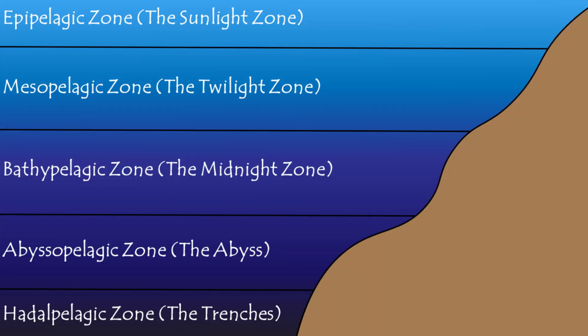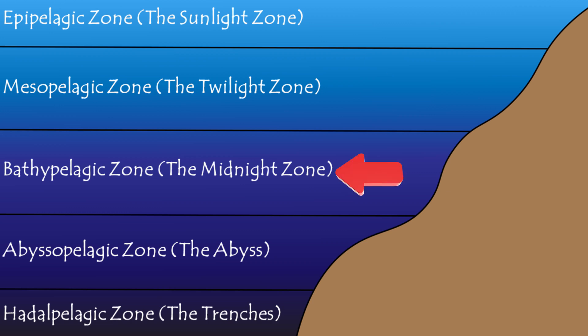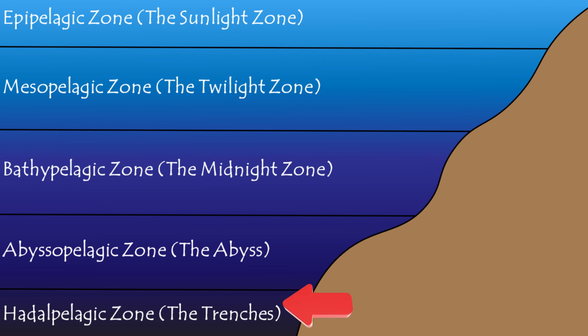Now you know that there are five layers of the ocean. They are the epipelagic zone, the mesopelagic zone, the bathypelagic zone, the abyssopelagic zone, and the hadopelagic zone.